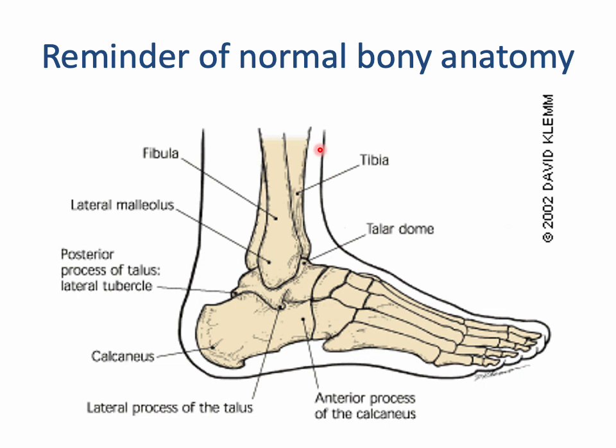On the lateral view, we can see the same structures: we've got the tibia and fibula, the talus, subtalar joint, calcaneus, partially seeing the talar dome, navicular, cuboid, cuneiforms, metatarsals and phalanges.